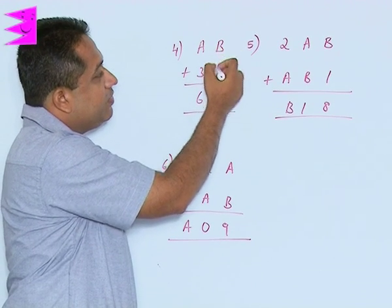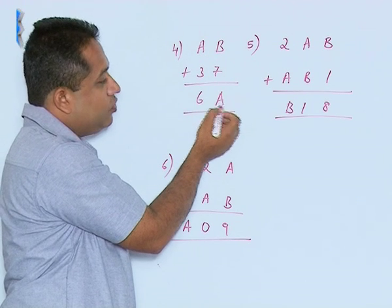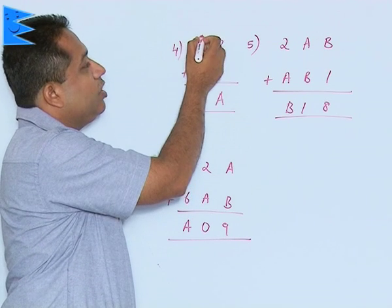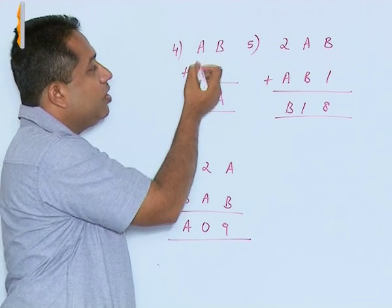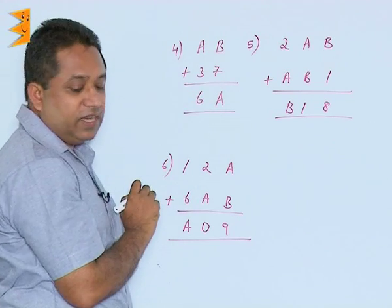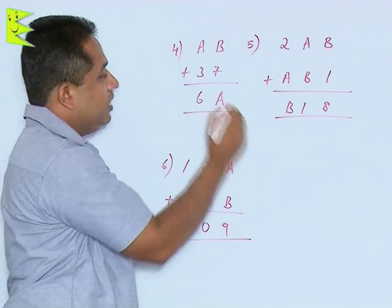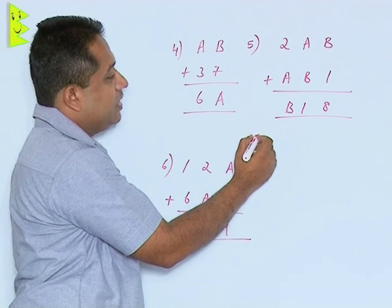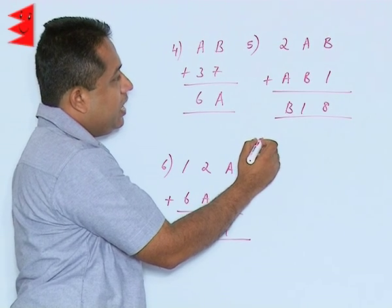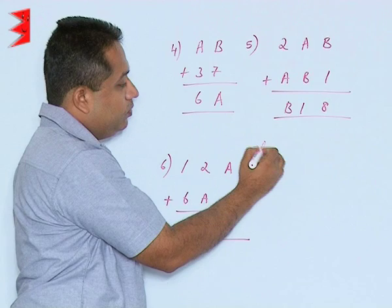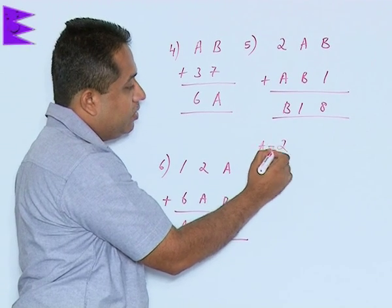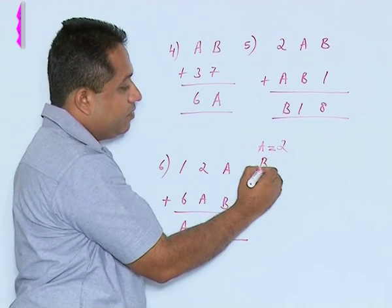So B can be 5, then 7 and 5 is 12. So we have 2 here. So 1 gets carried over. 1 plus 3 is 4. 4 plus 2 is 6. So that is satisfying this entire term. So here if I am going to rewrite this, I can say that A will be 2 and the value of B will be 5.